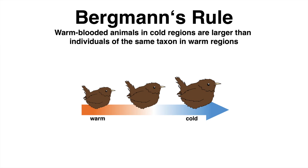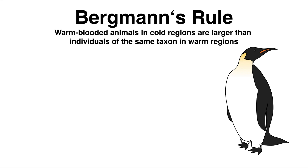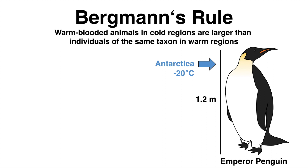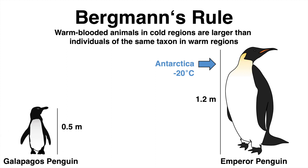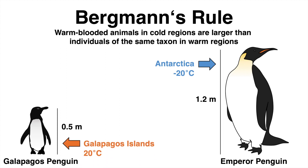It was observed that birds and mammals in colder regions were often way bulkier than closely related species in warmer environments. A good example here are penguins. The largest species, the emperor penguin, is found in Antarctica with average temperatures of minus 20 degrees Celsius. In contrast, one of the smallest penguin species, the Galapagos penguin, is endemic to the Galapagos Islands and is the most northern species of penguins, with high average ambient temperatures of around plus 20 degrees Celsius.